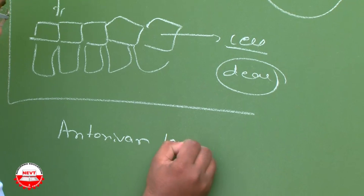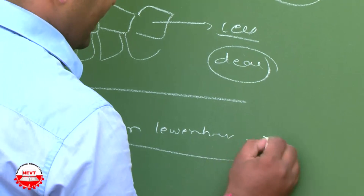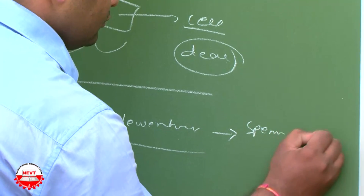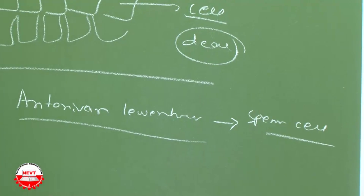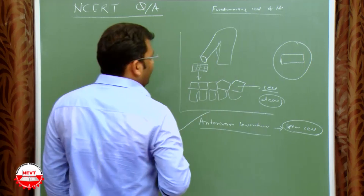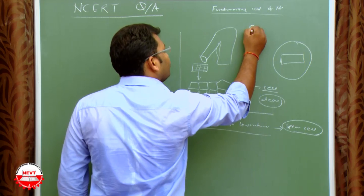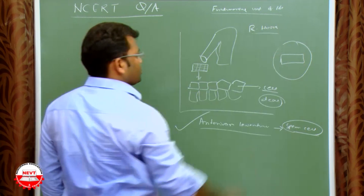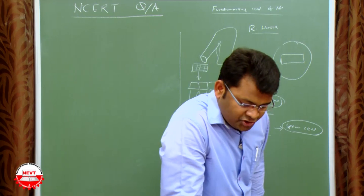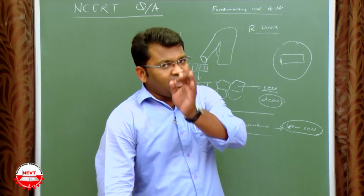Antony van Leeuwenhoek, called the father of microbiology, discovered the first living cell — a palm cell — using a microscope. So the dead cell was discovered by Robert Hooke, and the first living cell was discovered by Antony van Leeuwenhoek. Next question: why is the cell called the structural and functional unit of life?